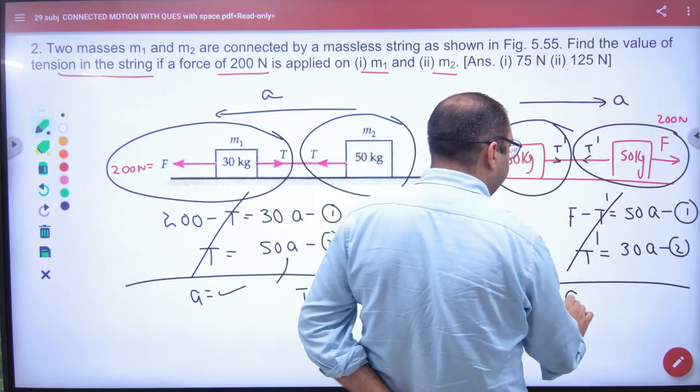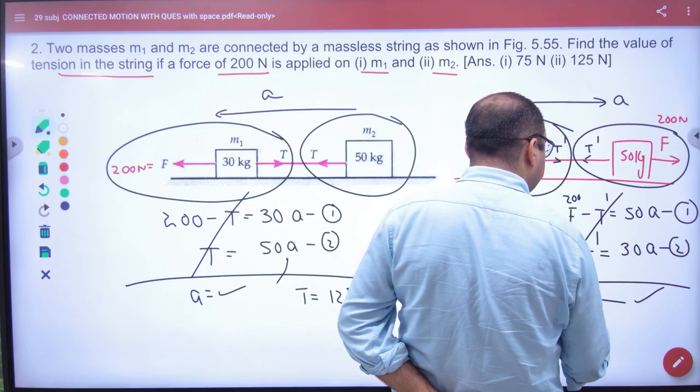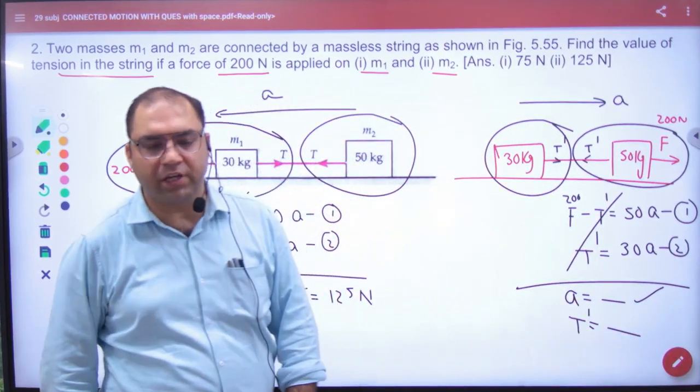Add it. F is 200 Newtons. Solve. And A, put it T dash I've checked.